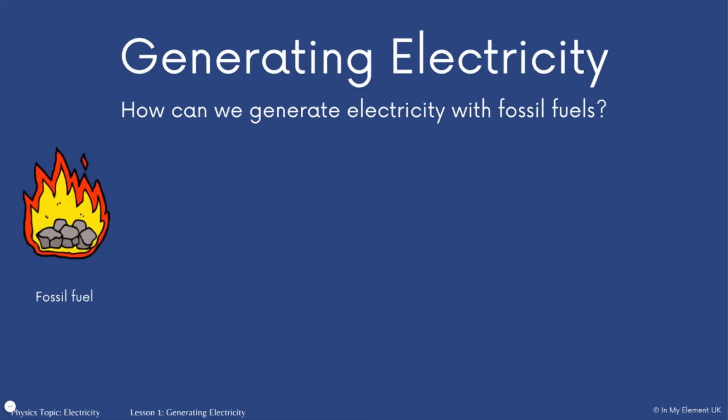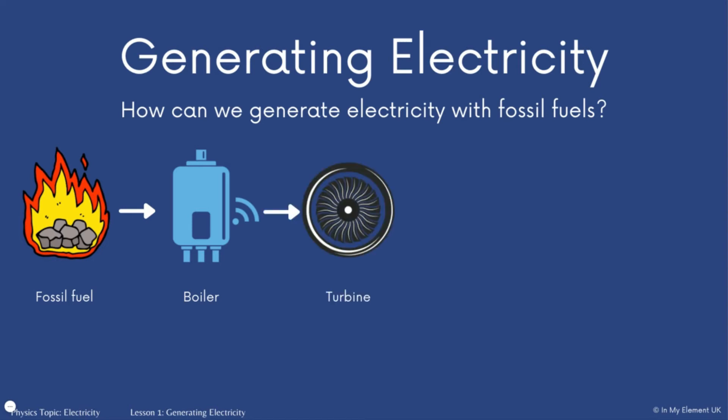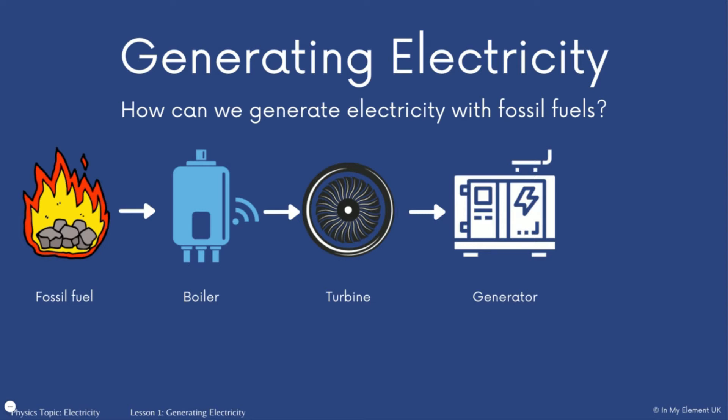We're going to explore how we generate electricity specifically with fossil fuels. You've got an image of coal — that's the fossil fuel we're going to burn. When we burn that fossil fuel, it's placed in a boiler, it burns and heats water, which generates steam. That steam then turns a turbine. The turbine that is turned generates electricity in the generator. That generator is linked by wires and pylons to what we know as the national grid, and electricity is then distributed across the country.